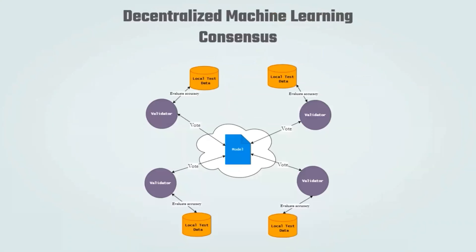This part explains how we customize the default consensus mechanism of Exonym to better reflect the purpose of our system. As you can see, we have a group of validators voting on whether a model should be added to the blockchain or not. Every one of them is testing the model on their local test sets and coming up with a verdict. If the majority deems the model to be valid, it is accepted and committed to the blockchain; otherwise, it is dropped.